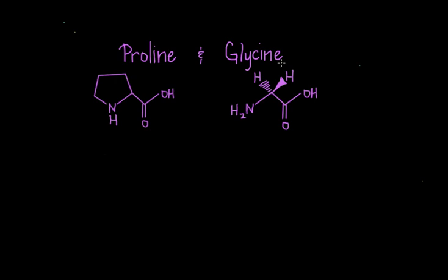Next up, we have proline. Taking a closer look, we have the backbone structure just like all the other amino acids. But then the side chain is an alkyl group that wraps around and forms a second covalent bond with the nitrogen atom of the backbone. We say that proline has a secondary alpha amino group, referring to the fact that the side chain forms a second bond with the alpha nitrogen — the nitrogen in the backbone of this amino acid.